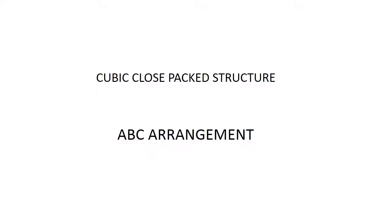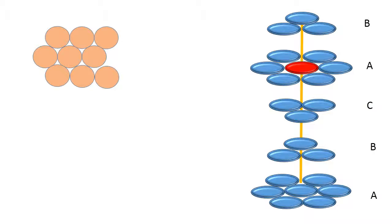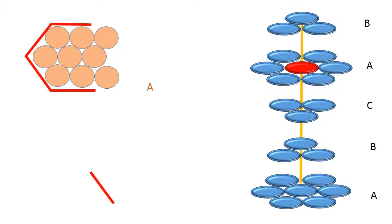We go for the next arrangement — ABC type, also called a cubic closed packed structure. Let us go back to our arrangement, the A layer. Now let us focus on the spheres inside the hexagon. I see that there are 7 spheres, and if I join the centers of the spheres, I get a hexagon.